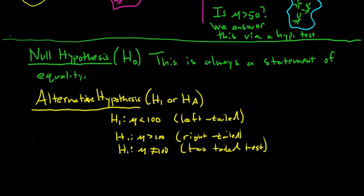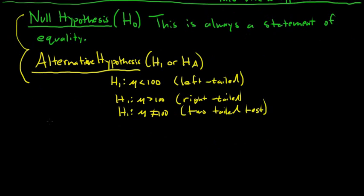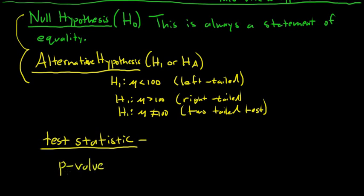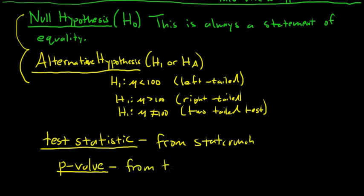You'll always have a null and alternate hypothesis — you read the question and figure these two things out. Then you compute something called the test statistic and the p-value. The test statistic is computed using a formula based on the null hypothesis — there are all kinds of formulas depending on what you're doing. For us, we'll use StatCrunch software. The p-value is computed from the test statistic, also from StatCrunch.